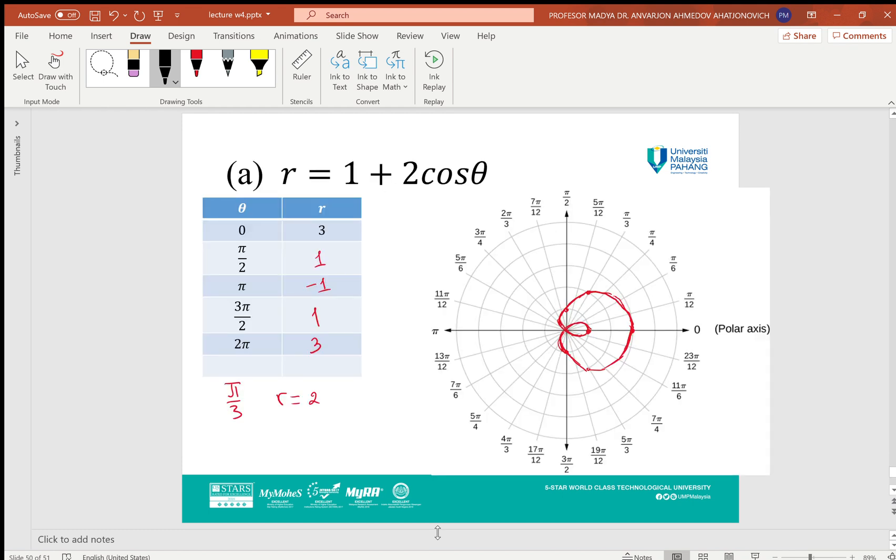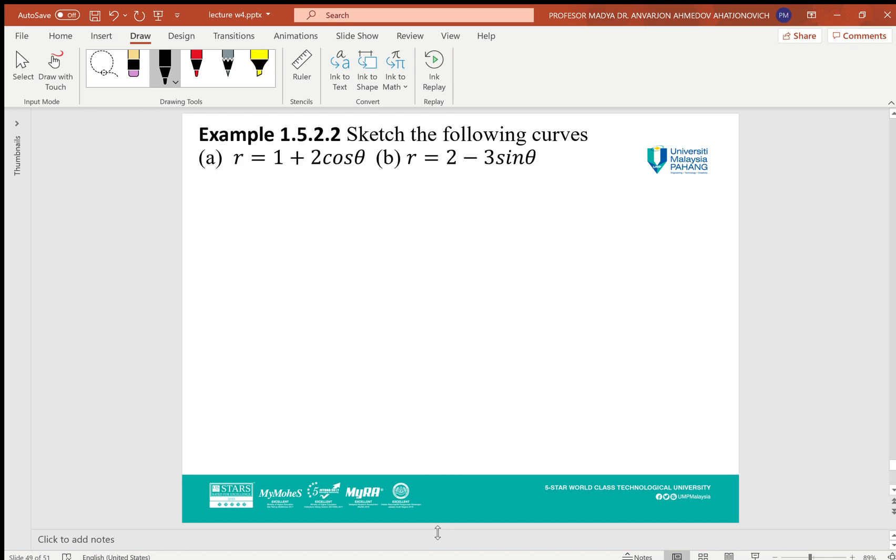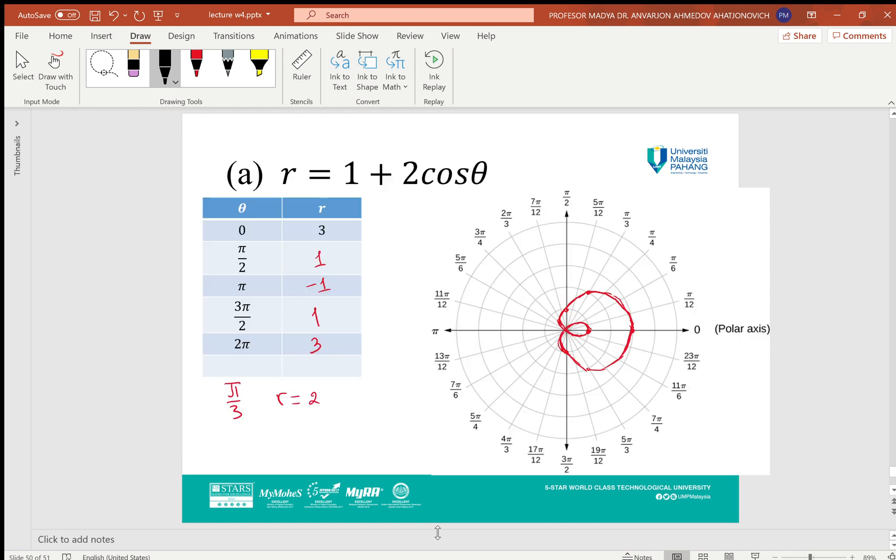For example, I will show one example here: r = 1 + 2 cos θ. I will make the table: θ = 0, π/2, π, 3π/2, and 2π. We can get R = 3, 1, -1, 1, 3. Then, for example, at θ = π/3, R = 2.